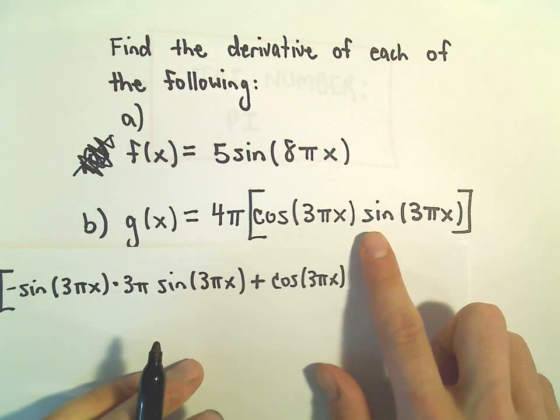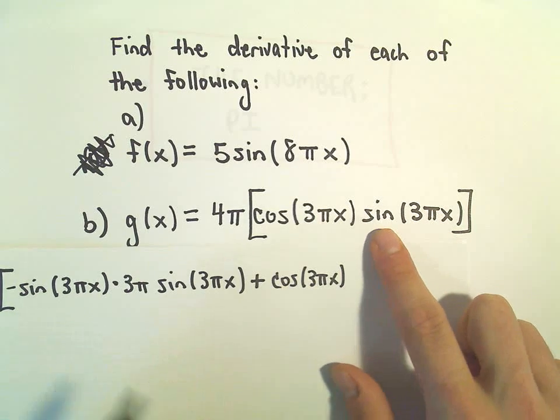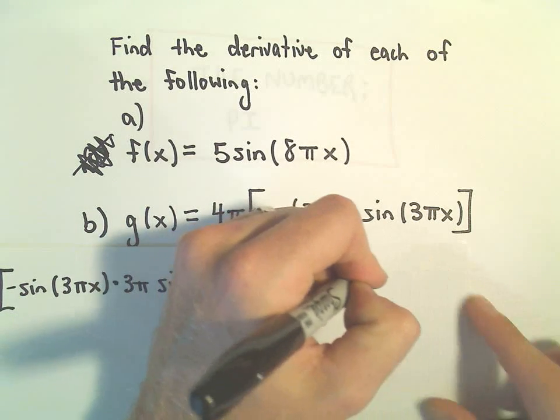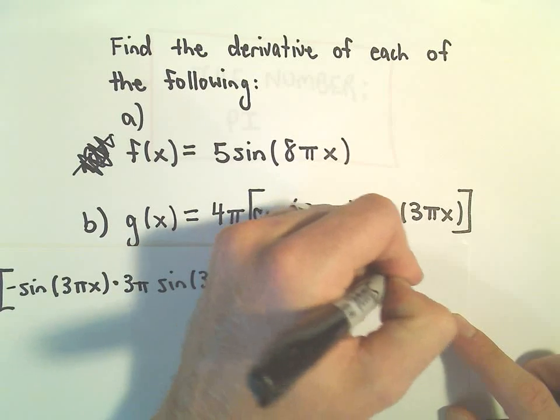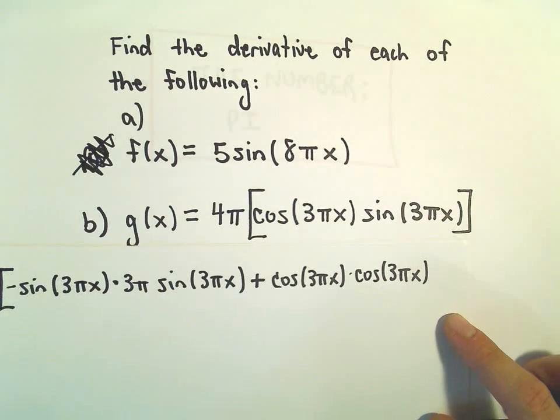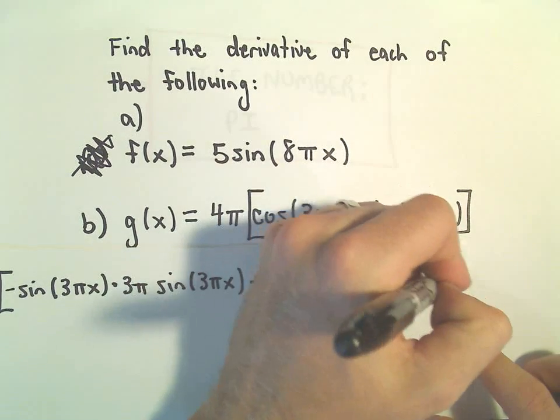Well, if we do the derivative of sine 3πx, again, this is where we'll have to use the chain rule. So, we'll get cosine of 3πx. And then the derivative of the inside will just be 3 times pi.